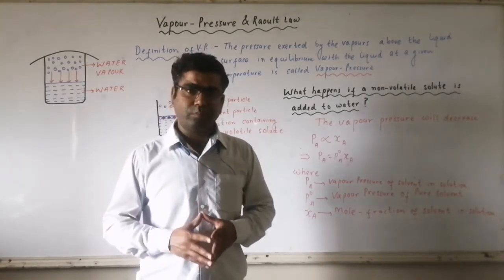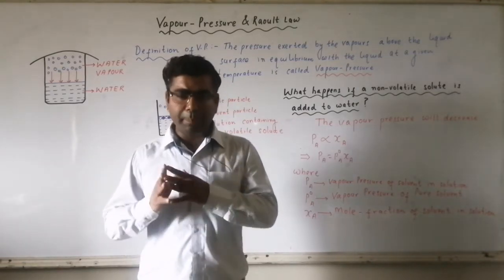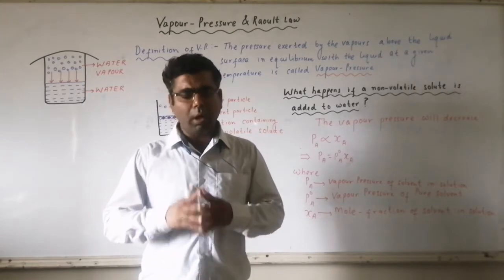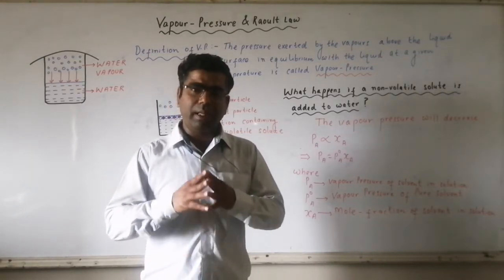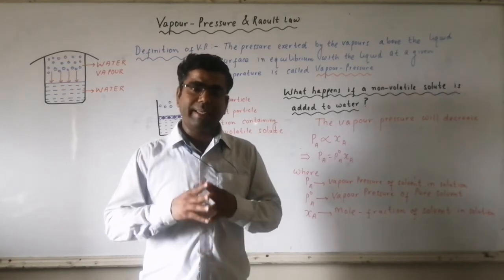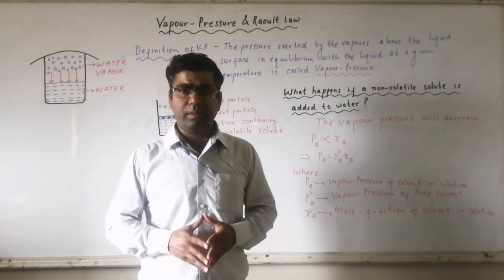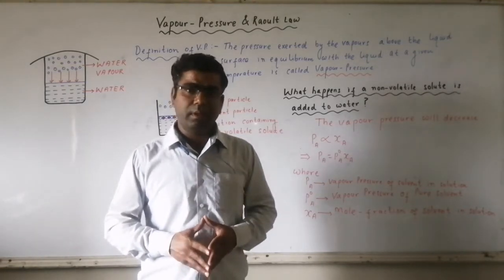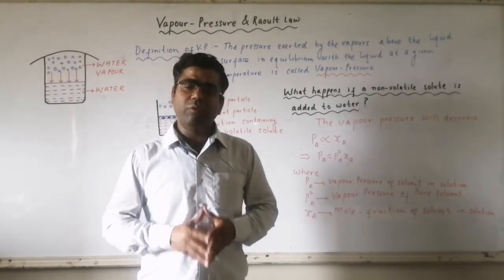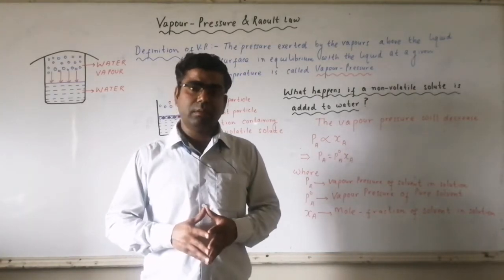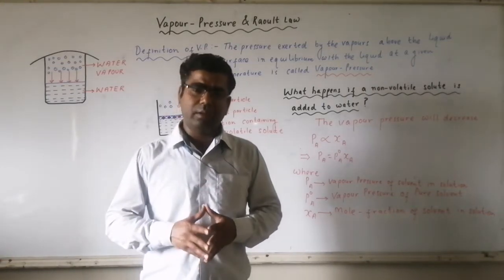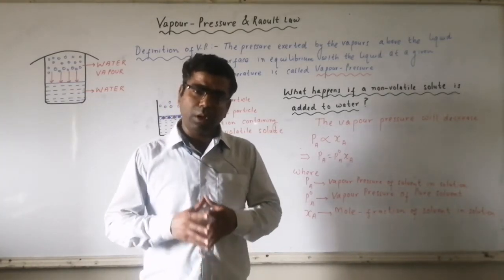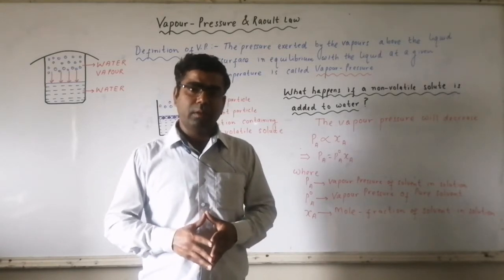Now the next case: what happens if a non-volatile solute is added to water or to any solvent? Non-volatile here means the solute cannot be converted to vapor state. If I use the term volatile solute, it means the solute can be converted to vapor form. Here I am adding a non-volatile solute like sodium chloride, common salt, common sugar, or urea — all these are non-volatile solutes.